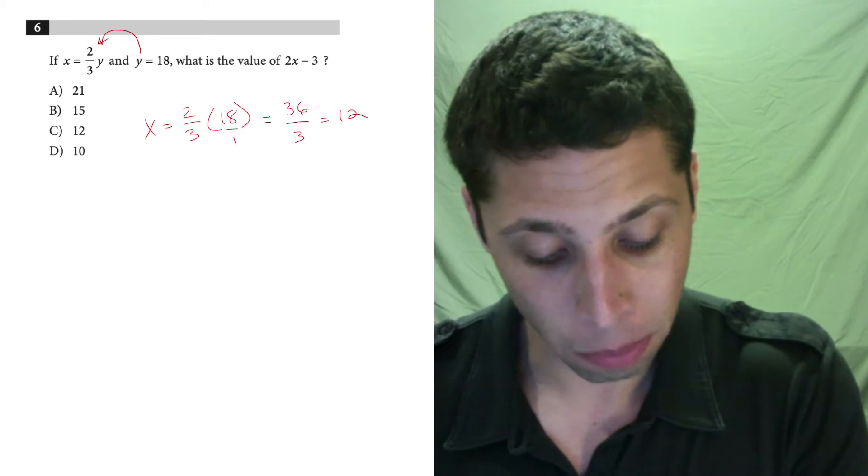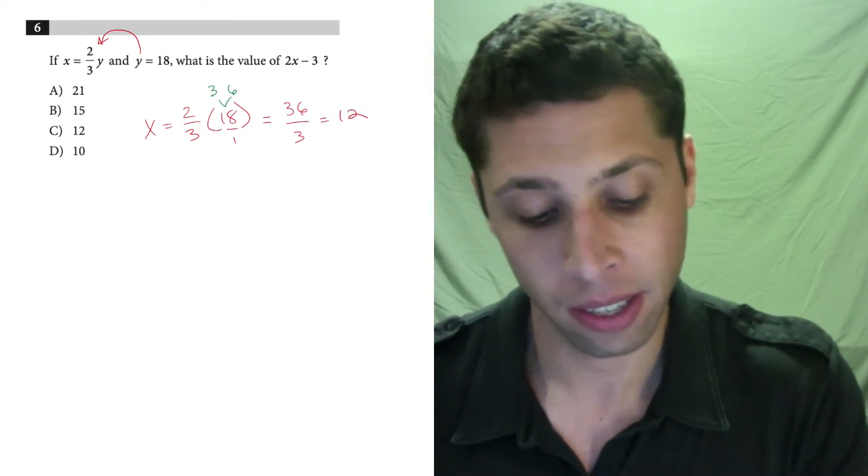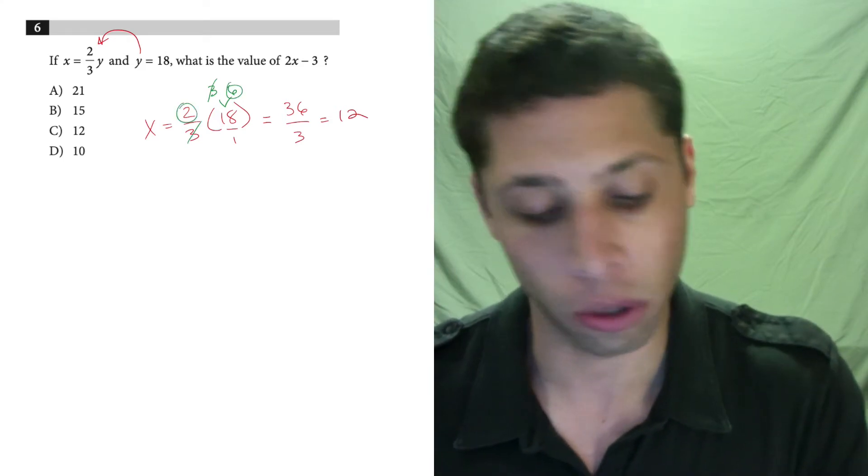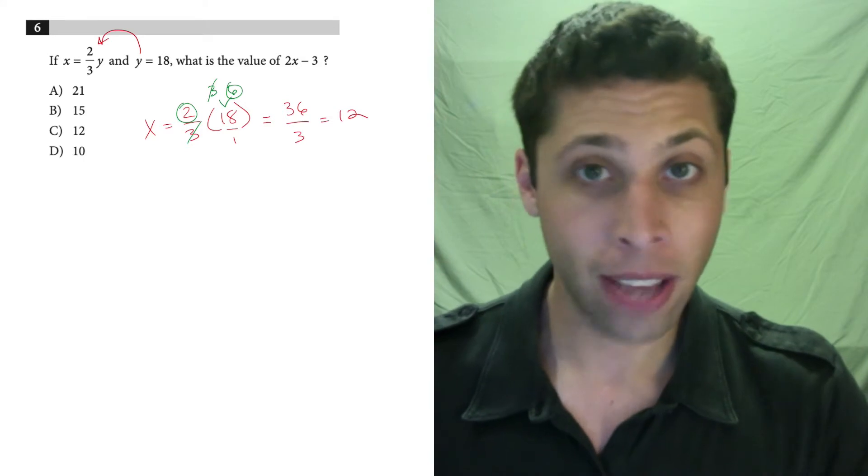We also could have simplified as we went and said, okay, 18 is really a 3 and a 6. So the 3s can cancel, leaving us with a 6 and a 2, which make a 12. So I don't really care what you do, but get to x equals 12.